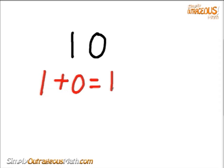So let's add those together. 1 plus 0 equals 1, and then we take the original number, which is 10, and subtract 1, and wow, we get the number 9.